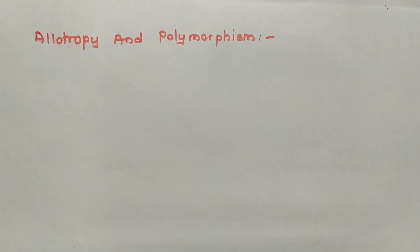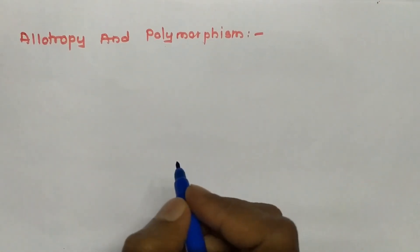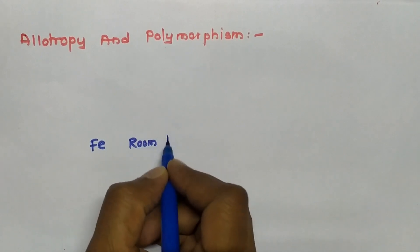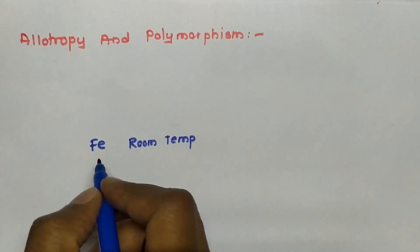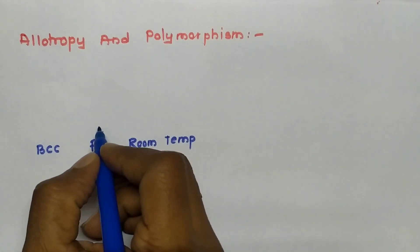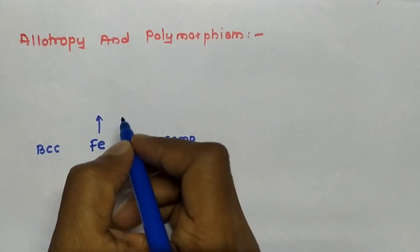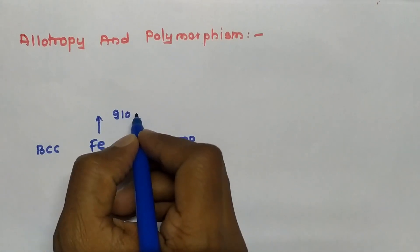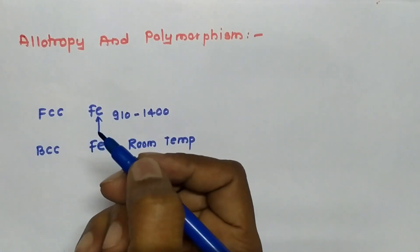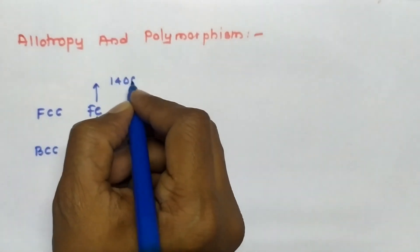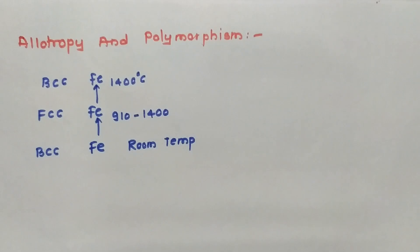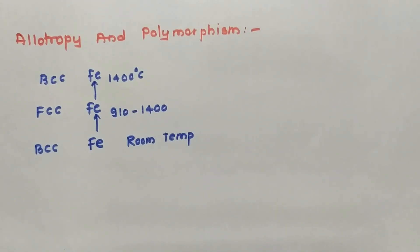What is the meaning of allotropy and polymorphism? As we know, if we change the temperature — suppose if we consider ferrous at room temperature — that ferrous will show the BCC crystal structure. If we increase the temperature from 0 to 910 degrees and from 910 to 1400 degrees, this Fe will show the FCC structure. Above 1400 degrees centigrade, this Fe will show the BCC structure again.